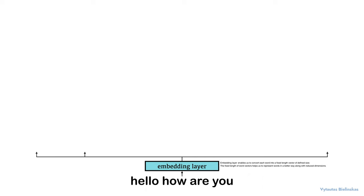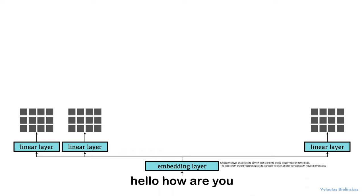Next to that, we have linear layers which take outputs from embedding layer and differentiate them into Q queries, V values and K keys.